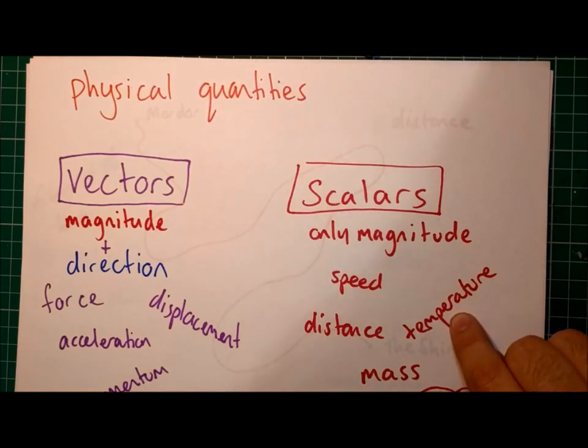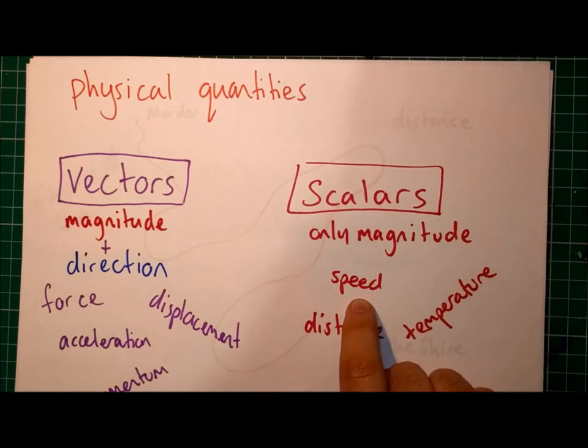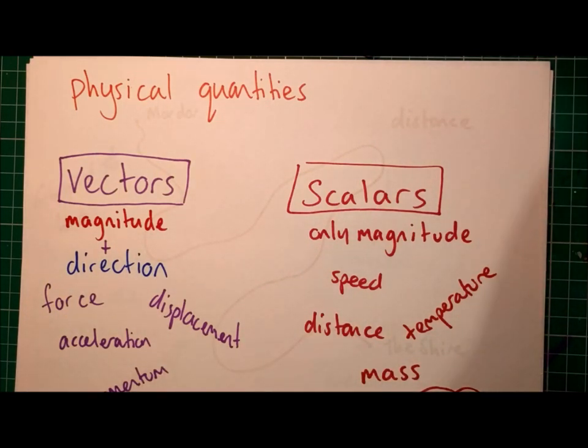Direction is meaningless for these values. So things like the temperature. It doesn't make any sense to say that it is 25 degrees Celsius north. Or the temperature in this room is 273 Kelvin up. That doesn't make any sense. The same with speed. Things like metres per second or kilometres per hour. Those are independent of direction.